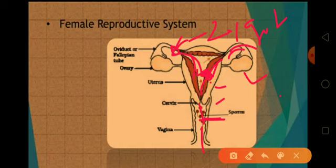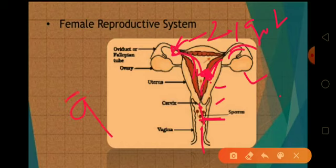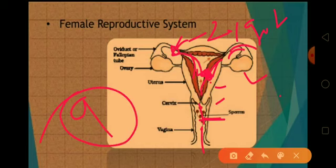The zygote is implanted, then further divides to form an embryo, and gets nutrition from the placenta. The development of the child takes nine months, and then a child is born. This is the female reproductive system and fertilization in a human being.